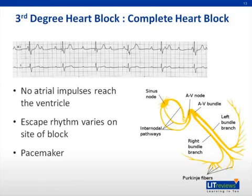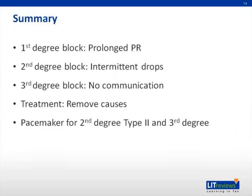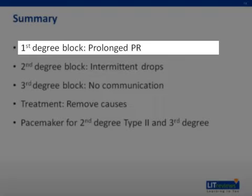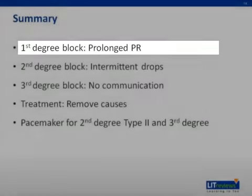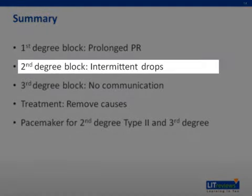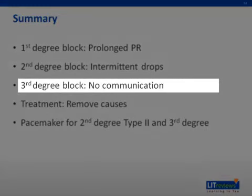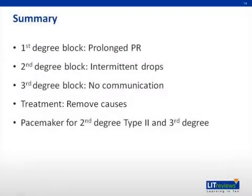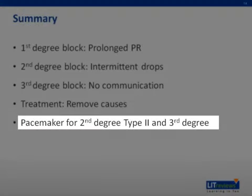Patients with complete heart block are almost always treated with a pacemaker if no reversible cause is found. To review: first degree block results in a prolonged PR interval, but each P wave is accompanied by a QRS complex. In second degree, there are intermittent drops of the QRS complex; the PR interval must be assessed to determine Mobitz type. In complete heart block, there is no communication between the SA node and the ventricles. Treatment always starts by looking for and treating reversible causes. Pacemakers are almost always indicated for second degree type II and third degree if no reversible causes are identified.